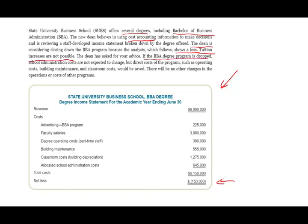If the BBA degree program is dropped, school administration costs are not expected to change. But direct costs of the program — such as operating costs, building maintenance, and classroom costs — would be saved. So the administration cost will not change, but those direct costs will change, and as a result the revenue will also change. Now let's compute the differential cost and revenue and find out whether this is a good or bad decision based on this specific information.